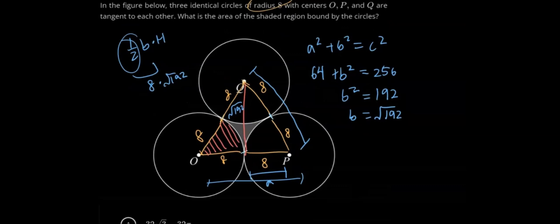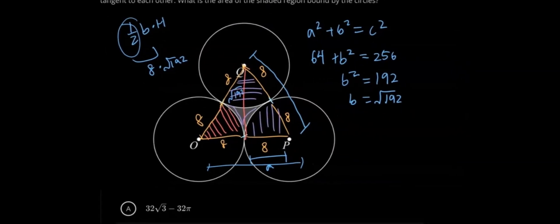Now we've found the area of the shaded region, but we need to subtract all these black areas. Now we know that this angle is 60 degrees. Why? Because we have 180 degrees in a triangle, and if this is an equilateral triangle, all the sides have the same length—they're all 16. That means they all have the same angle. So we divide by 3 angles, which gives 60 degrees. All equilateral triangles have each angle equal to 60 degrees.